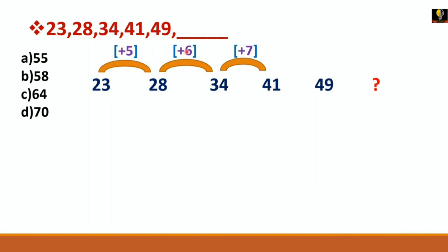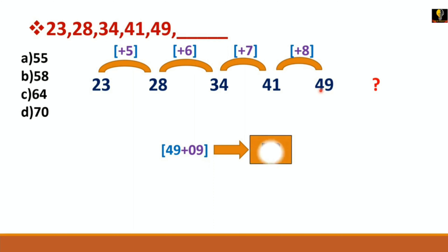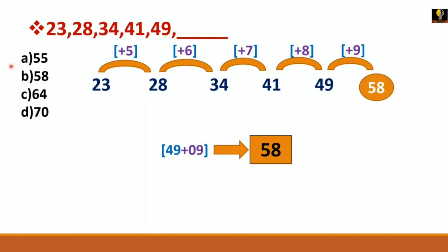So the pattern is addition of 5, addition of 6, addition of 7 — meaning next we add 8, then 9. Adding 9 to 49 gives the answer 58 to complete this series. As per the options, the answer is option B.